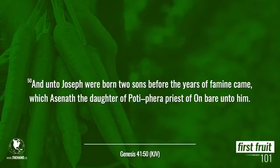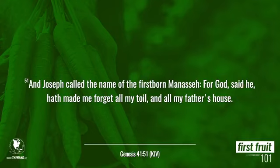So Joseph gets married to Ashnath, the daughter of Potiphar who was a priest of On. Verse 51 says, and Joseph called the name of his firstborn Manasseh — for God, here's the meaning, have made me forget all my toil and all my father's house. So Manasseh basically means to forget.